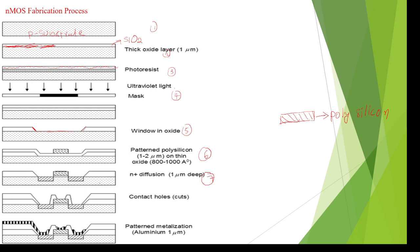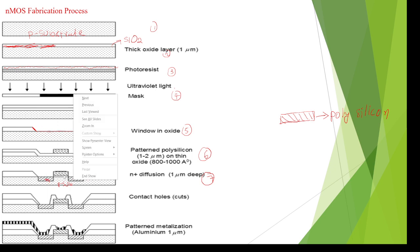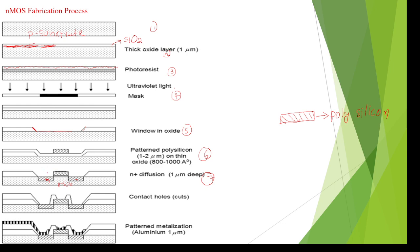In the seventh step, we diffuse electrons into the p-substrate, which is having holes, to design the source and drain terminals. We can see that electrons are inserted here and here. This is the source, this is the gate, and this is the drain terminal.